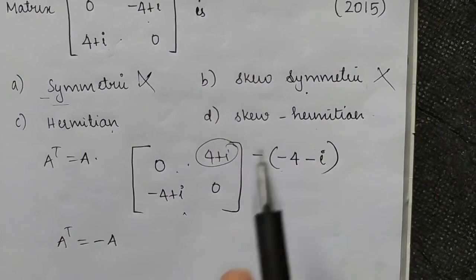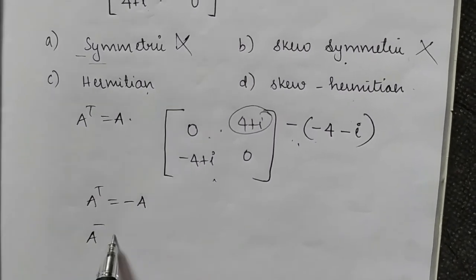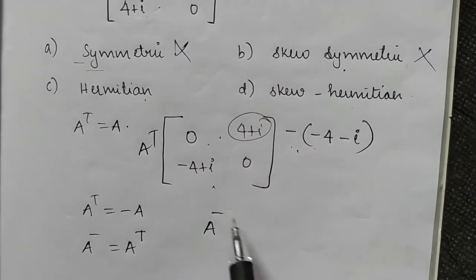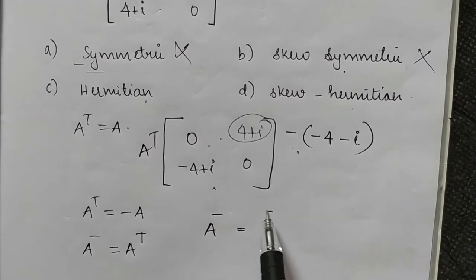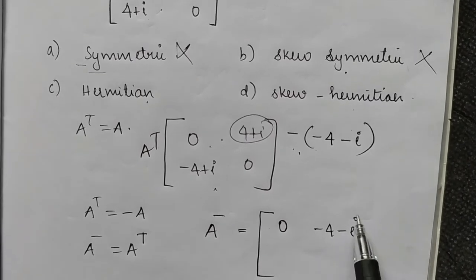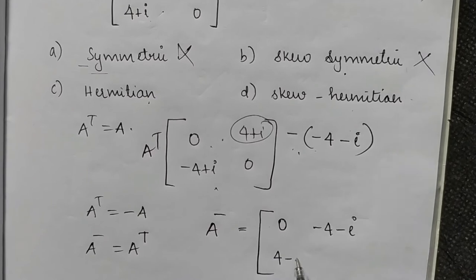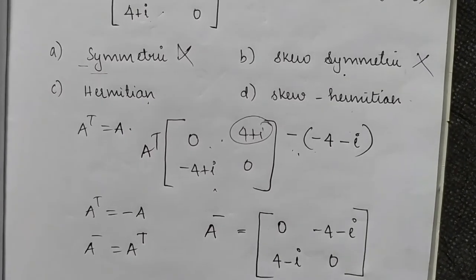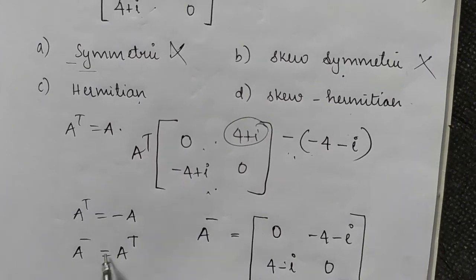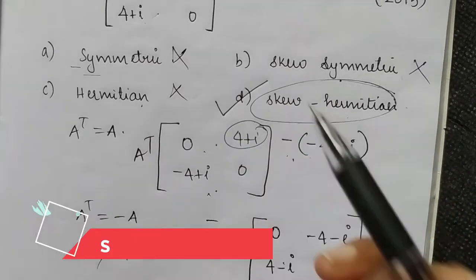Now checking Hermitian: A conjugate transpose equals A. This gives 0, minus 4, minus i. Taking the conjugate of i: we check the symbol in i. This confirms it is a skew-Hermitian matrix. This is the right answer.